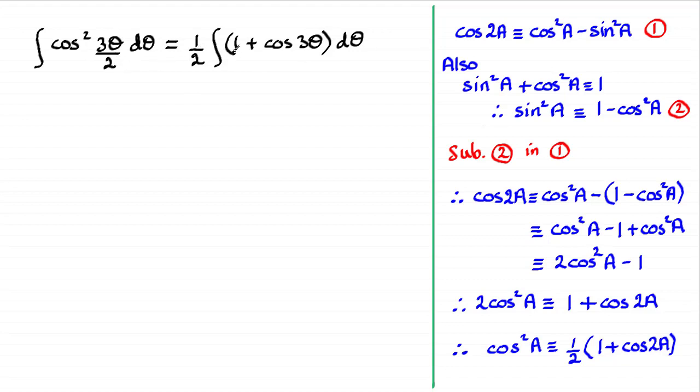And notice then how that half being written like this instead of all over 2 makes it a lot easier when it comes to this integral. We're allowed to do that. We're allowed to bring a constant that is a factor out the front of an integral.